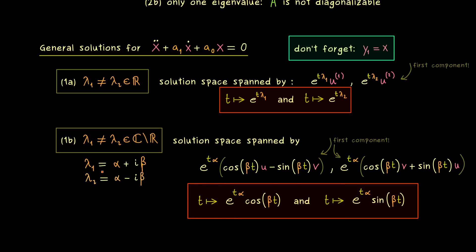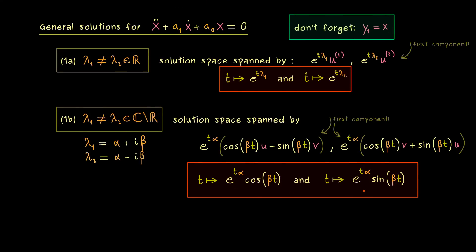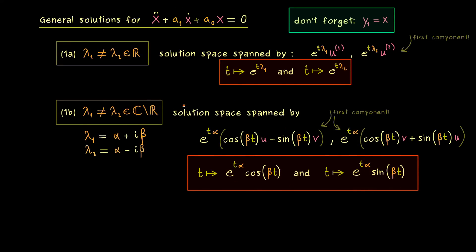One particular sub-case is when alpha equals zero, in which case we simply have the cosine function and the sine function spanning the solution space.